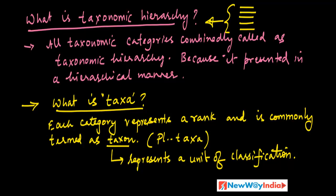All taxonomic categories combined are called the taxonomic hierarchy because they are presented in a hierarchical manner — bottom, then next level, next level, like this. That is the reason it is called taxonomic hierarchy.